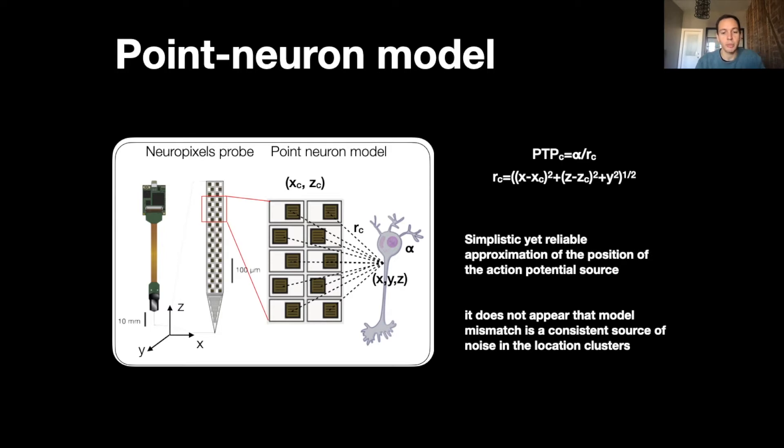This model is a bit simple, but it allows to reliably approximate the position of the source of an action potential. Moreover, if you think of a neuron which has a long axon along the probe, all of its spikes will have the same elongated shape where we will see high amplitude all along the probe. Given our model, all of these spikes since they have similar shape will be clustered together and localized in the same area. So we find that model mismatch is not a source of noise for the localization clusters.